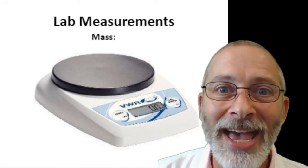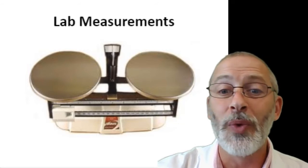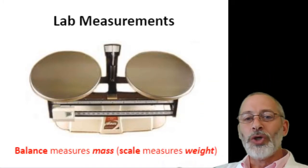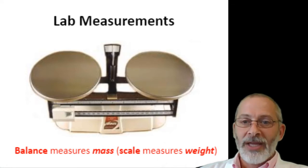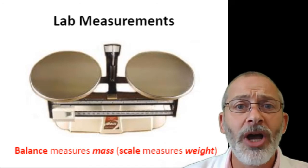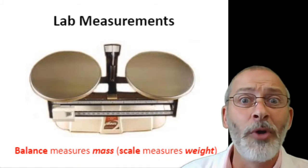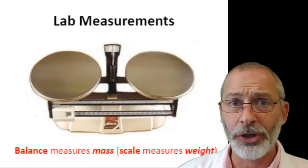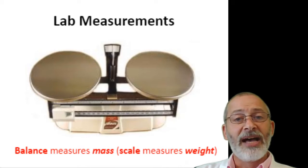Some of you said scale, some of you said balance. The first one I showed you was a digital one; this is a double pan one — but they're both balances. Balances are used to measure mass. Scales measure weight. There is a difference: weight is a measure of the force of gravity pulling down on an object, and it changes from one place to another. Mass doesn't change from one place to another — your mass is your mass whether you are in space or here on Earth. So a balance measures mass; a scale measures weight.